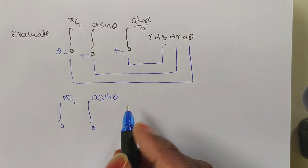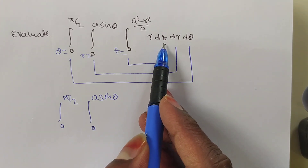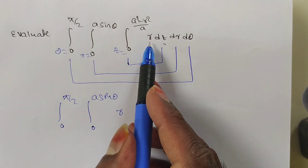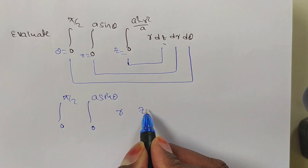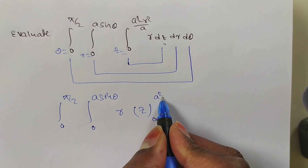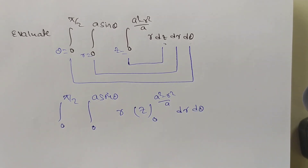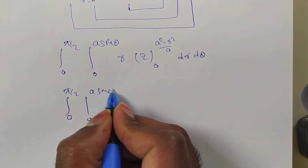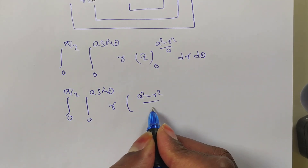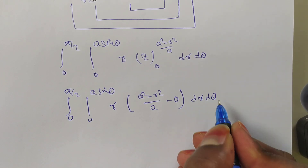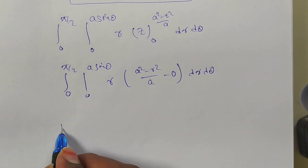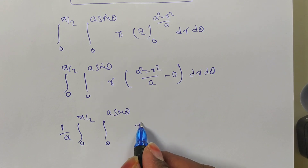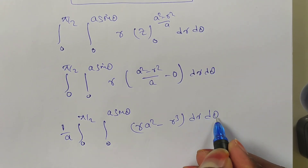First we integrate with respect to z, then with respect to r, then with respect to θ. Integrating r with respect to z — since r is a constant — gives r·z. Applying limits from 0 to √(a²−r²)/a, we get r·(√(a²−r²)/a − 0) dr dθ. This becomes the integral from 0 to π/2, integral 0 to a sinθ, of r·(a²−r²)/a dr dθ.